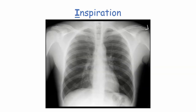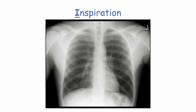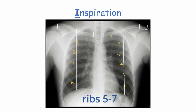Next is inspiration. The patient must take an adequately deep breath in when the chest X-ray is being taken, as this allows us to visualise more of the lungs. If not, a lot of the lung field is missed. We can tell if there's adequate inspiration by identifying where the mid-clavicular line meets the diaphragm. The anterior portion of rib 5, 6, or 7 should cross the line. Less than rib 5 means hypo expansion; more than rib 7 means hyper expansion.